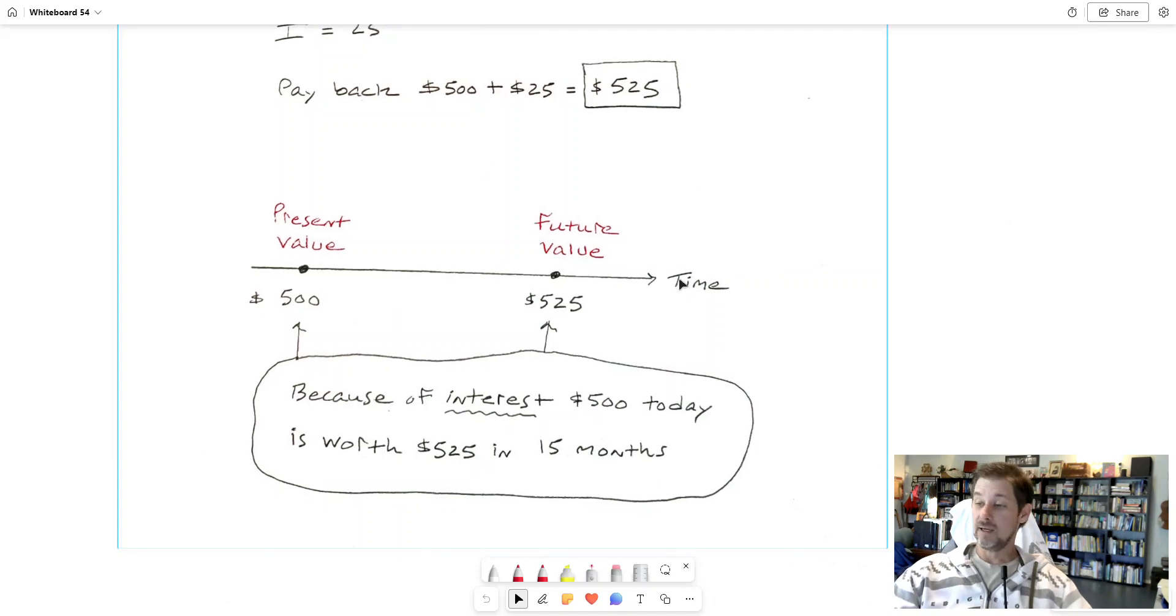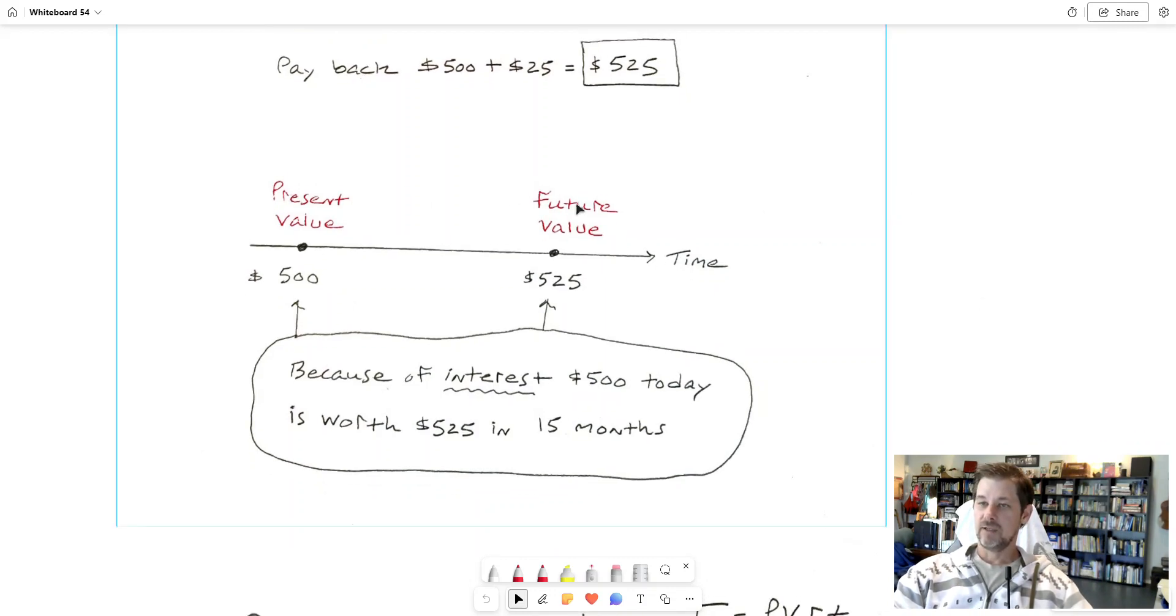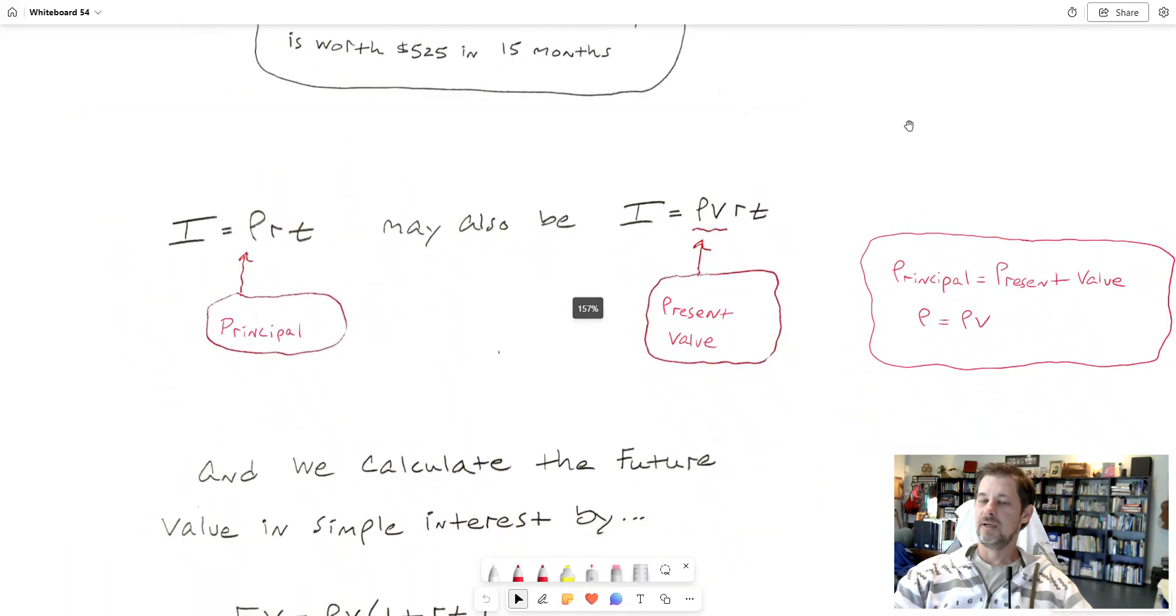So that's why we call these things present value and future value. Whenever you hear present value or future value in any context in our module on financial math, then just think of it like this: basically there's what the money is worth today versus in the future. And it's just because of time, interest is accumulated over time, and it's because of the interest rate.